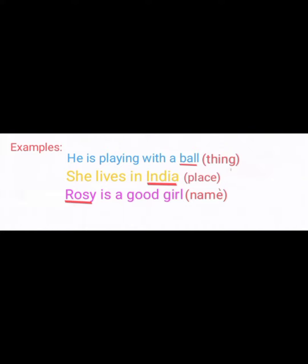Examples: He is playing with a ball — ball represents a thing. She lives in India — India represents a place. Rosie is a good girl — Rosie represents a name.